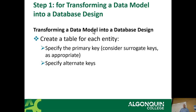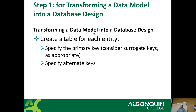Now let's talk about transforming the data model to a physical model. Step one: create a table for every entity — each square box in your ERD becomes a table. Specify the primary key. At this point you're allowed to create surrogate keys. Maybe the candidate keys from your conceptual design aren't very good — like a SIN number, email address, or phone number, which can all change. Therefore you may want to use a surrogate key to generate a sequence of numbers instead.